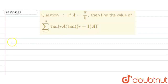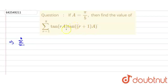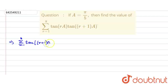First, we will write the equation. It is given that summation is from r equal to 1 to 8. I will write the tan((r+1)a) term first and tan(ra) after — that won't make any difference, that would be the same. So, tan((r+1)a) multiplied by tan(ra).